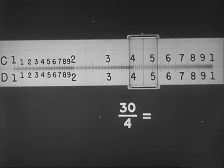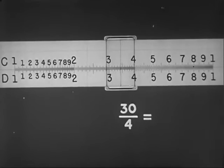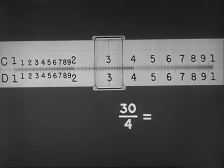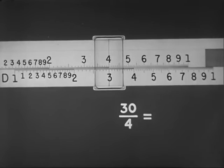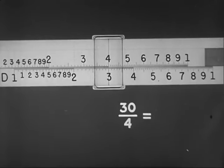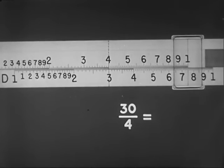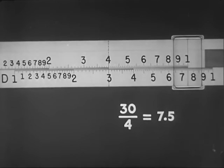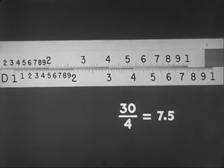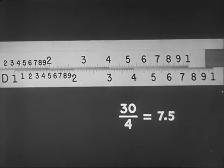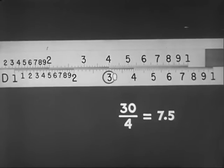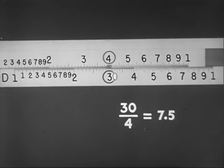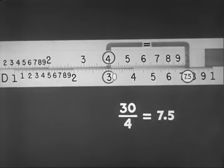To review an example in division, say 30 divided by 4. First, find 3 on D, and to it slide 4 on C. Move the hairline to the index, and read the answer 7.5 on D. Again, the ciphers and decimals required are added mentally. Division procedure may be diagrammed like this: 30 divided by 4 equals 7.5.